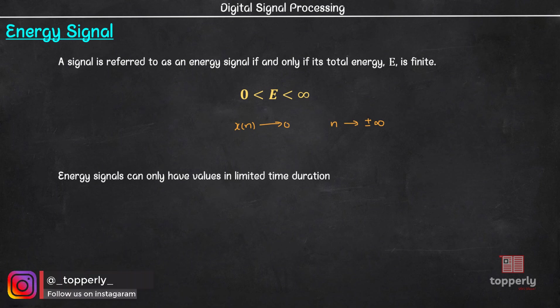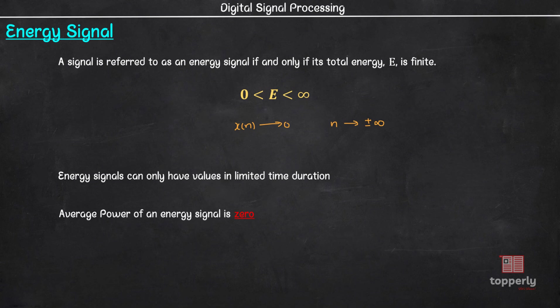For example, a signal having only one pulse is an energy signal. Another example is an exponentially decaying signal, as it has finite energy. An important thing to keep in mind is that the average power of an energy signal is zero. This is because of dividing finite energy by infinite length.